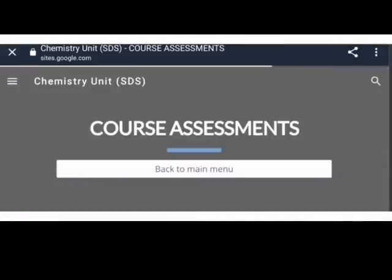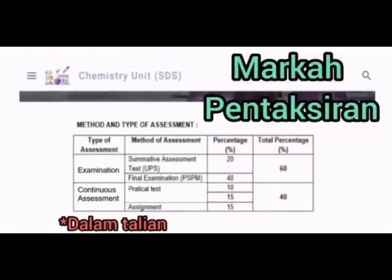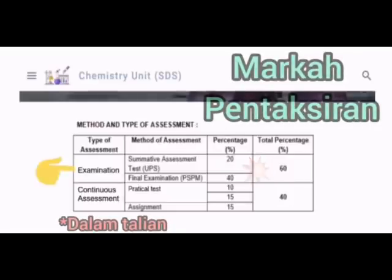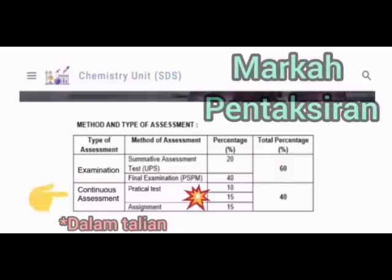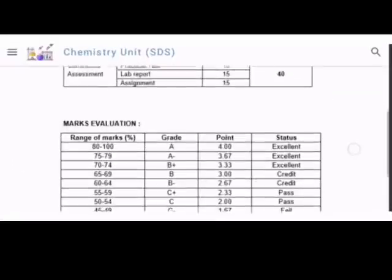Kita pergi kepada course assessment. Method dan type of assessment terbahagi kepada dua, iaitu examination dan continuous assessment. Untuk examination, terbahagi kepada summative assessment test dikenali sebagai UPS dan final examination yang dikenali sebagai PSPM. 60 markah ataupun 60% diperuntukkan untuk examination, UPS 20% manakala PSPM 40%. Untuk continuous assessment, terbahagi kepada practical test dan assignment, dan jumlah markah adalah 40%.